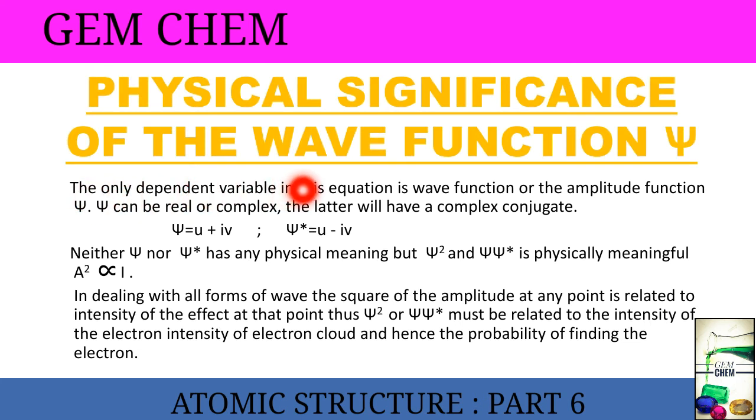The only dependent variable in this equation is the wave function or the amplitude Ψ. Ψ can be a real number or a complex number. The latter will have a complex conjugate. When Ψ is taken as a complex number, it will have two: the complex number and its conjugate, Ψ and Ψ*. Ψ is given by u + iv and Ψ* is given by u - iv. Neither Ψ nor Ψ* has any physical meaning, but Ψ² and ΨΨ* is physically meaningful.